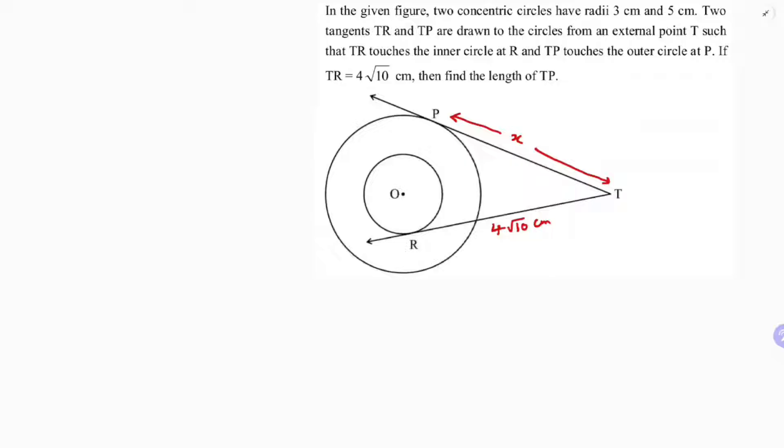So first what I will do is I will join OR and OP and OT. So now if we take the triangle, see this radius is 3 cm and this radius is 5 cm.